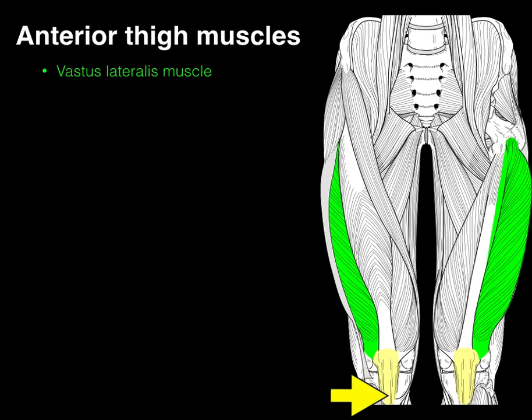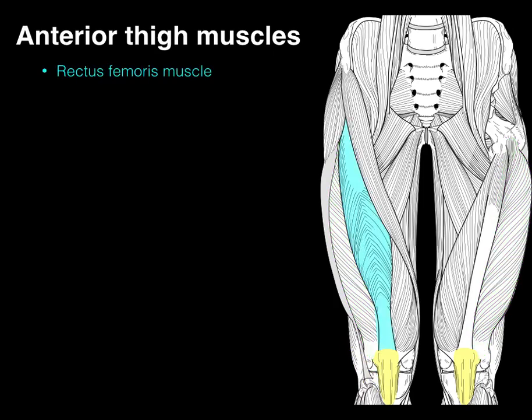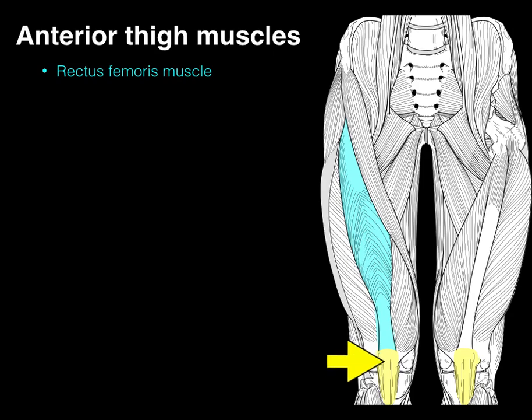The rectus femoris gets its name because 'rectus' means straight — it's the big straight muscle on the front of the femur. It arises from the anterior inferior iliac spine and is the only one of the quads that crosses the hip joint, making it a weak hip flexor. Its tendon engulfs the patella and inserts on the tibial tuberosity.